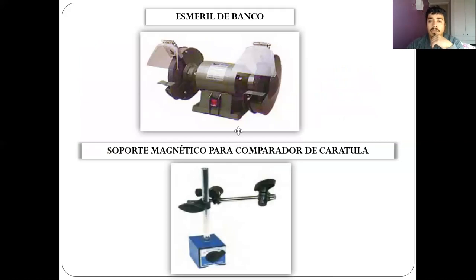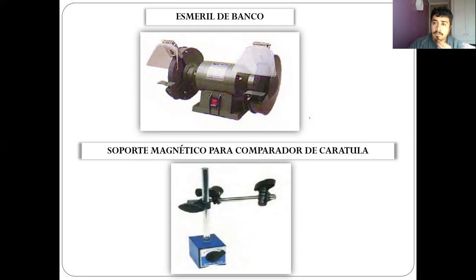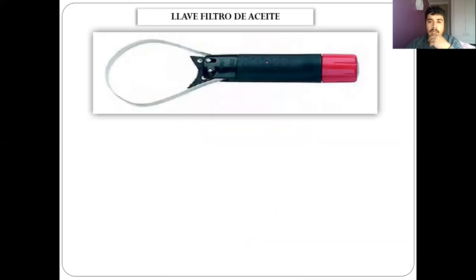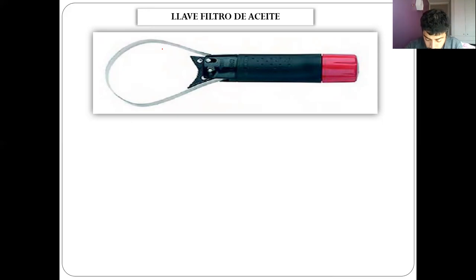El esmeril de banco donde probablemente ustedes hicieron los ensayos de chispa. El soporte magnético para el comparador de carátula: se gira esto, se magnetiza y puede quedar pegado a la estructura del torno, la fresa o lo que esté trabajando el mecánico. La llave de filtro de aceite, que es una especie de elástico de tela, permite el proceso de apriete o soltar filtros.